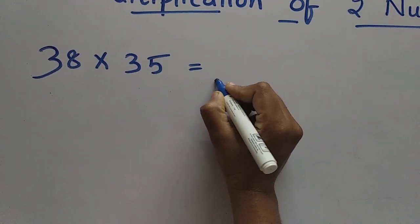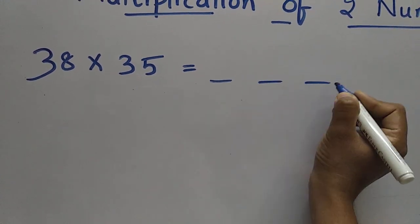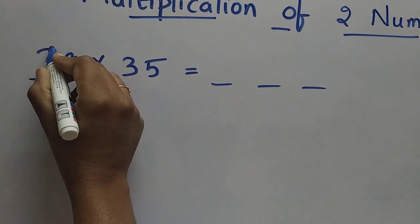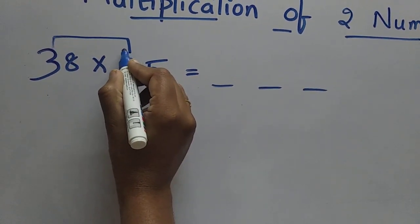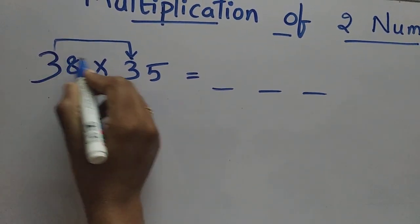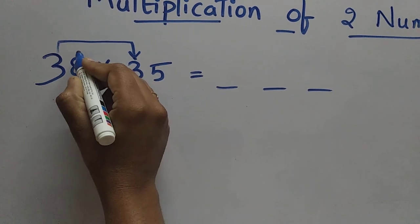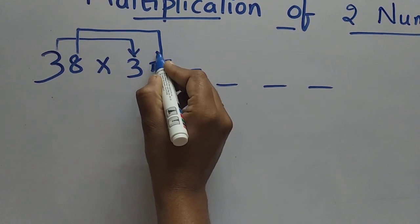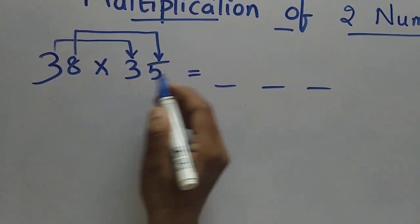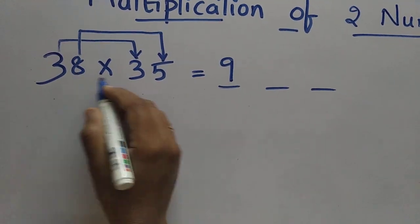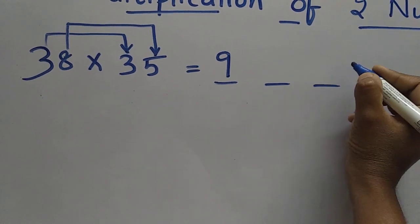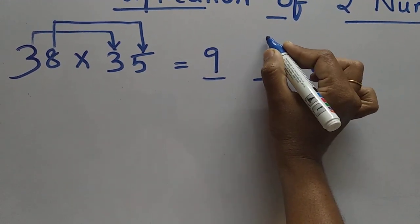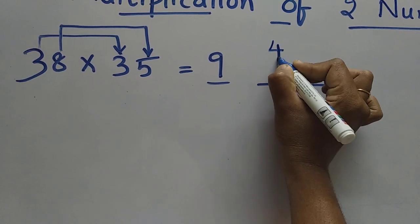For this we have to take 3 blanks here. First we can do the multiplication of 3 with 3, and after that we can multiply 8 and 5. 3 times 3 is 9, we can write here. 8 times 5 is 40. For this 40 we can take 0 here, and we can take 4 as a carry here.